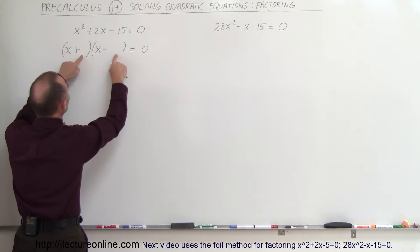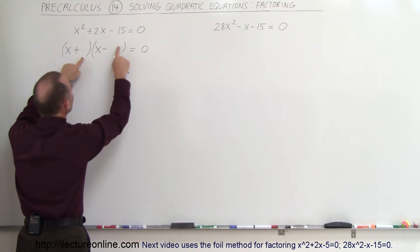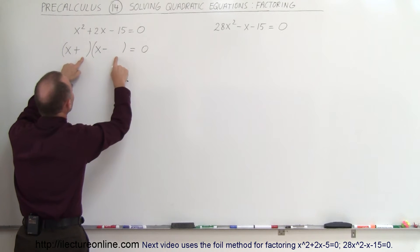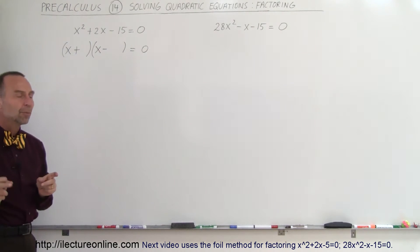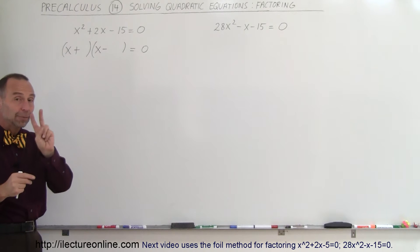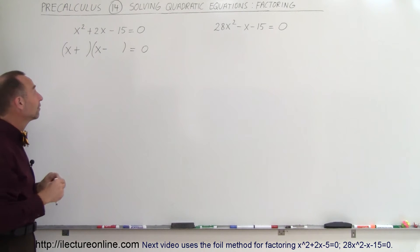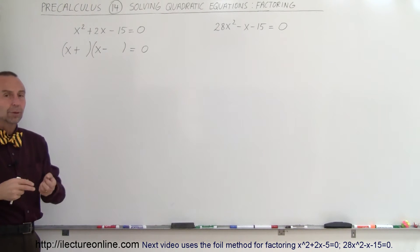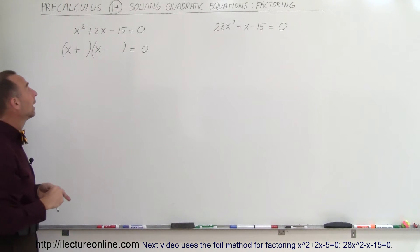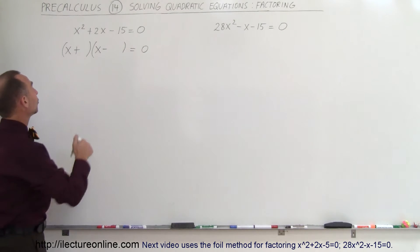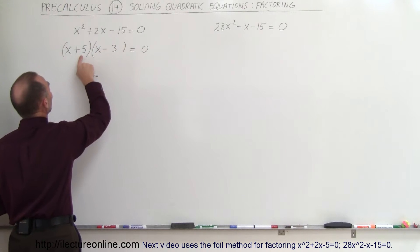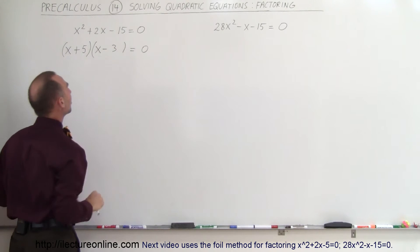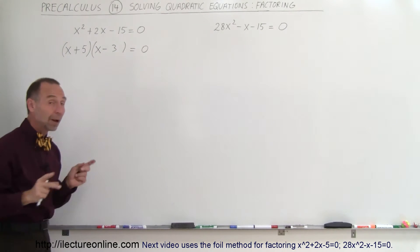The last two numbers, when you multiply them together, you get minus 15. When you add them together, you get a plus 2. That means the positive number is bigger than the negative number by 2. So 5 and 3 seem to fit the bill — plus 5 and minus 3 — because the positive number must be 2 bigger than the negative number.